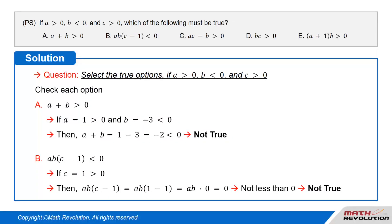Option B: A times B times (C minus 1) is less than 0. If C equals 1 (which is greater than 0), then A times B times (C minus 1) equals A times B times (1 minus 1), which equals A times B times 0, which equals 0 — and 0 is not less than 0. Hence, this option is not true.